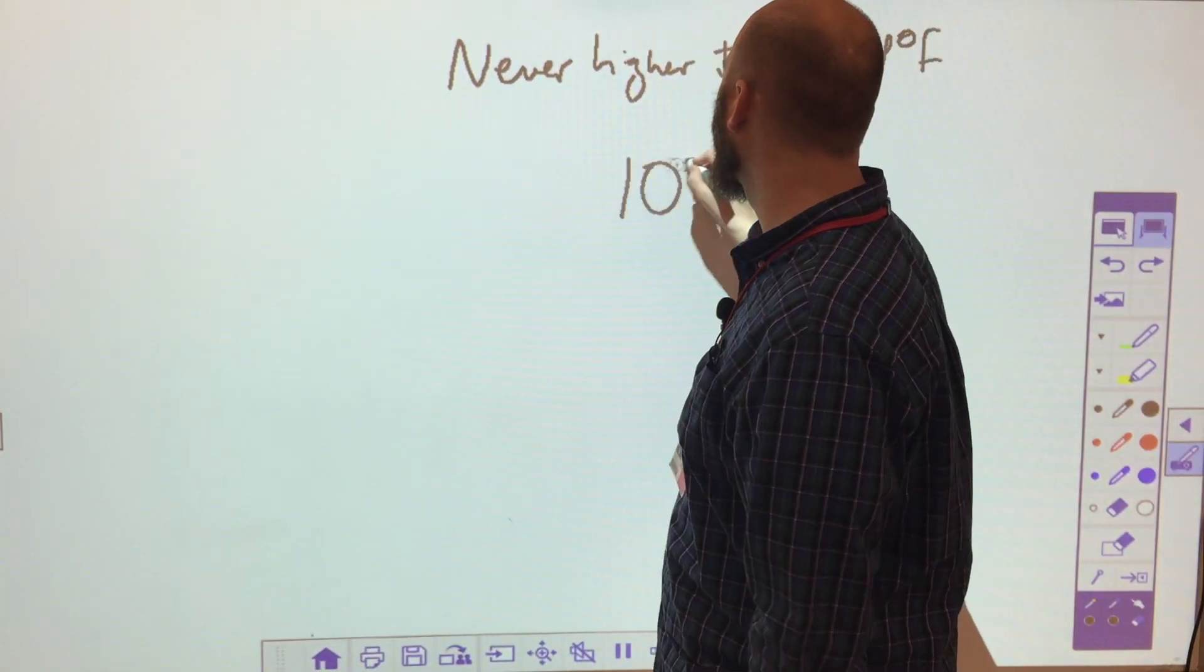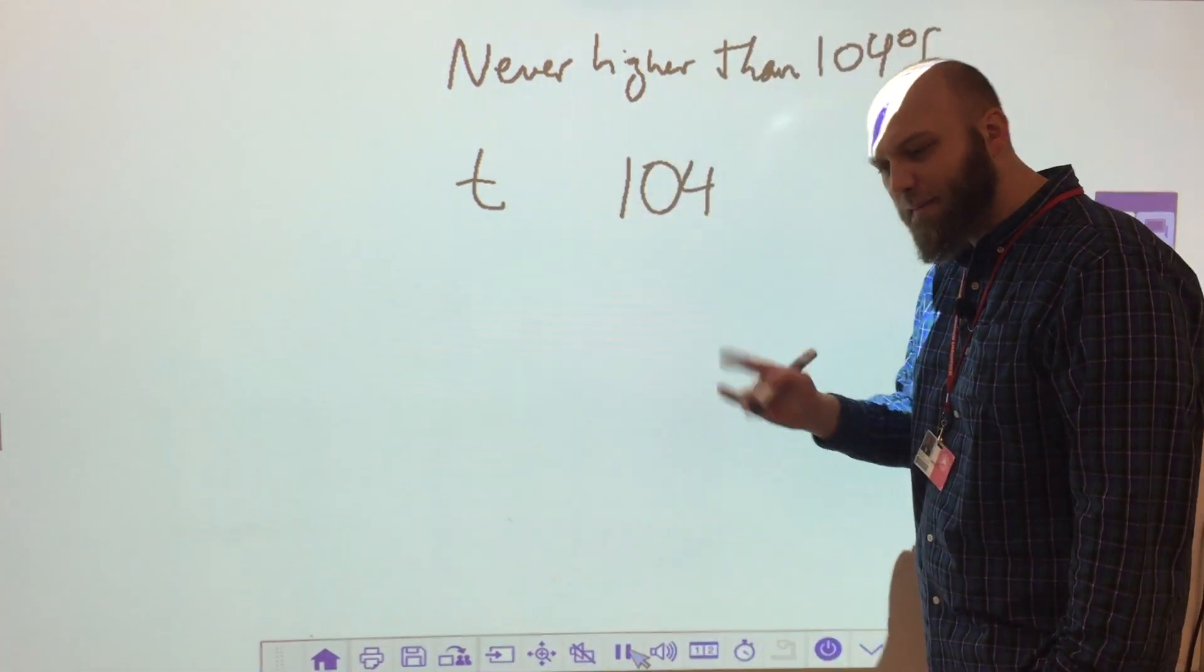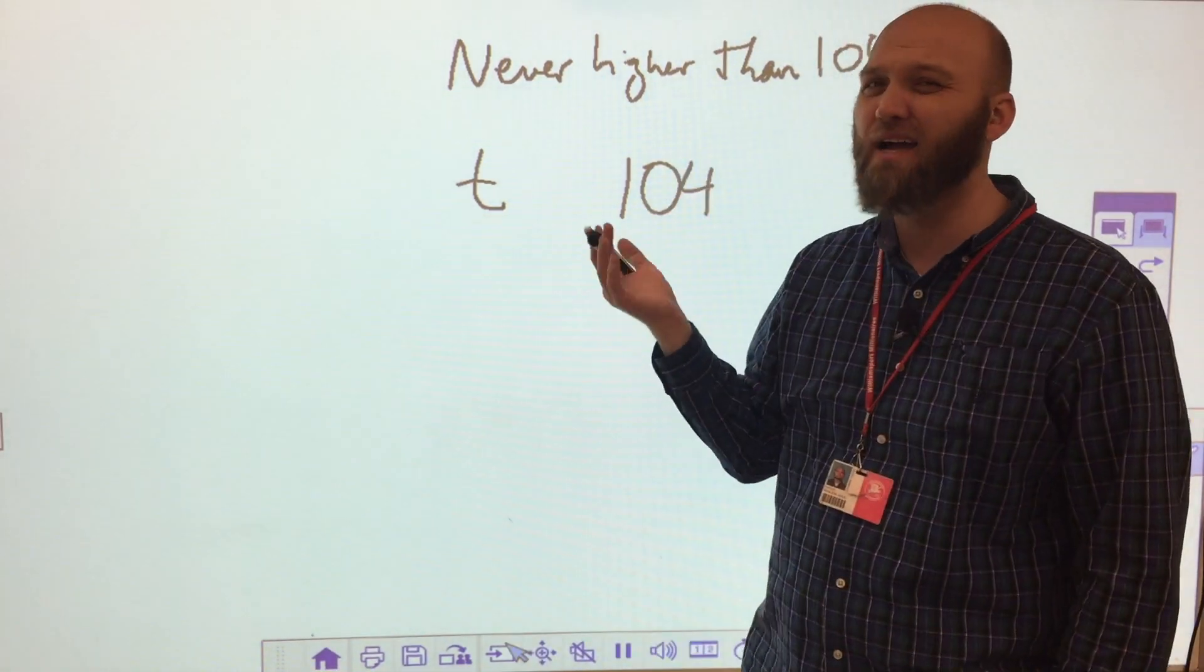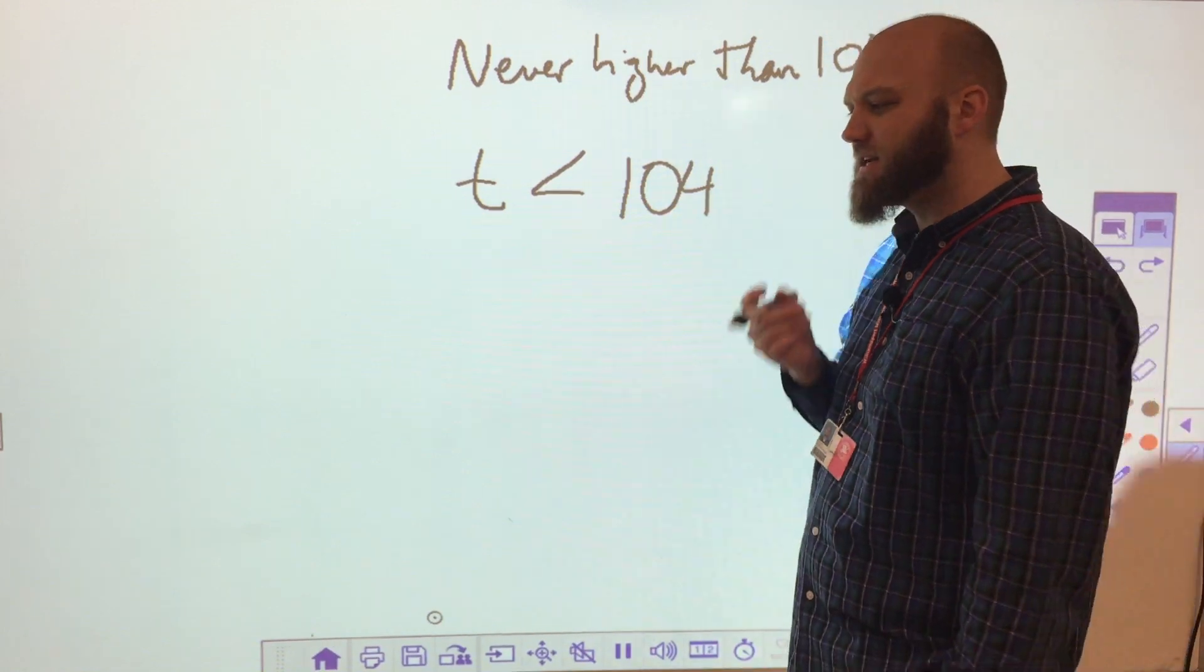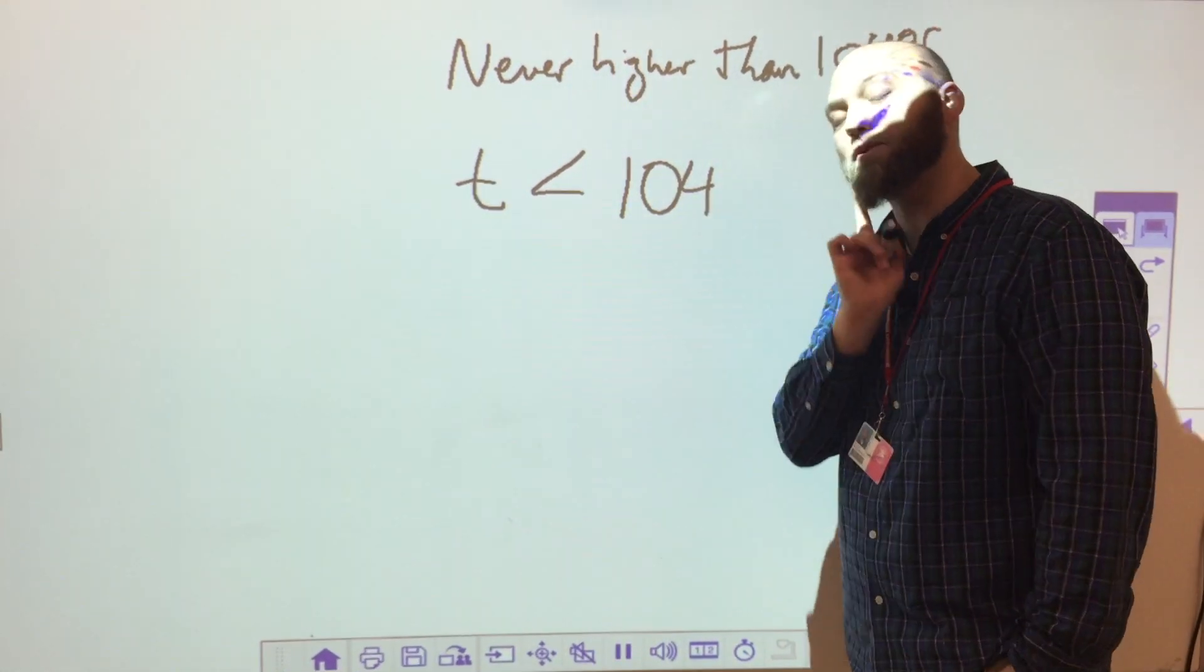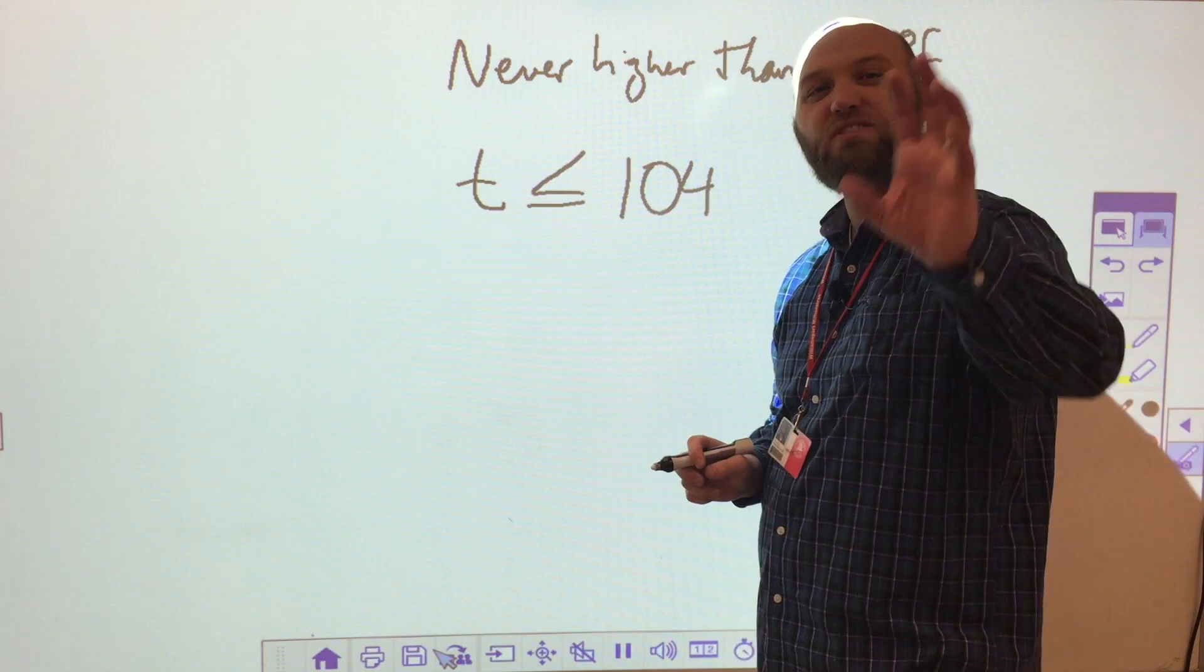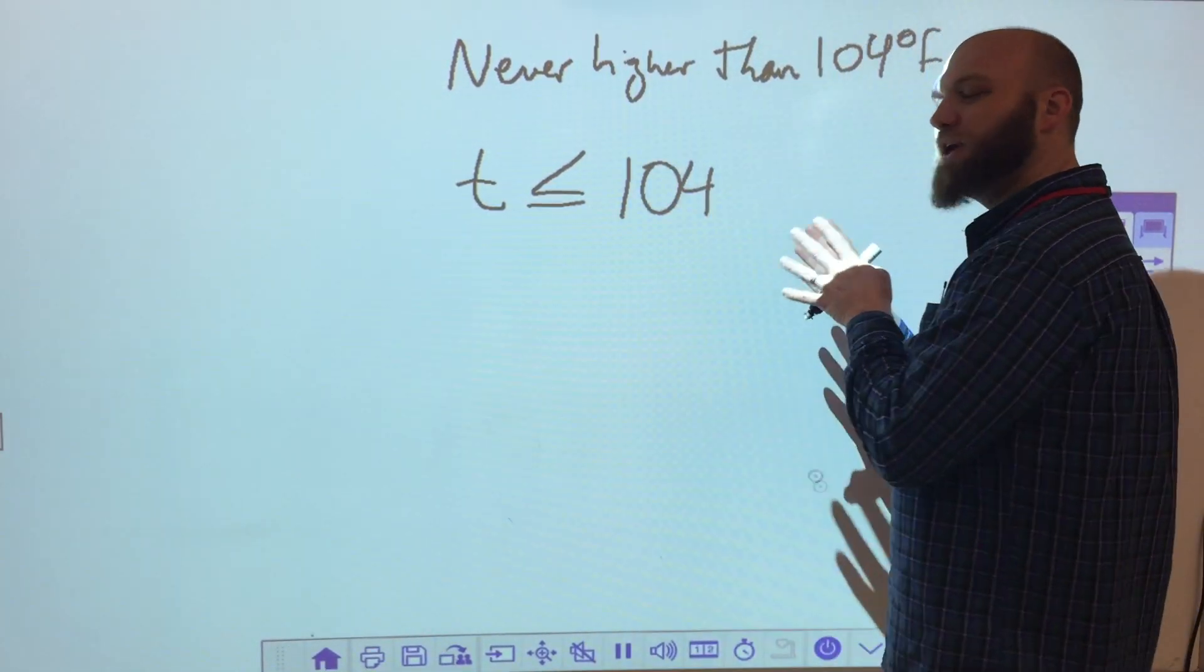Never higher than 104. So that means that 104 and my temperature are the two things that I'm talking about, and I want to know how they relate to each other. So is my temperature higher than 104? Well no, of course, it said never higher, so it can't be bigger. So it has to be less than. And I'm going to ask myself, okay, so it's never higher than 104. Does that mean that it could be 104? Could it be 104 degrees? Yes, 104 still makes that true.